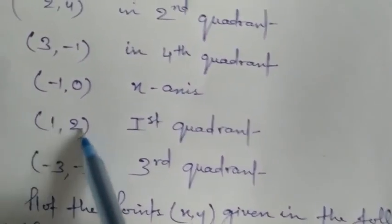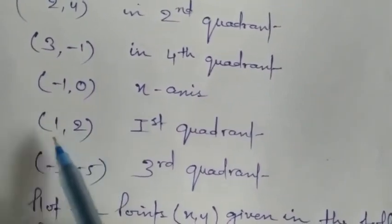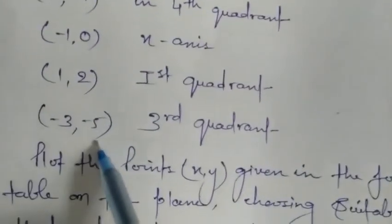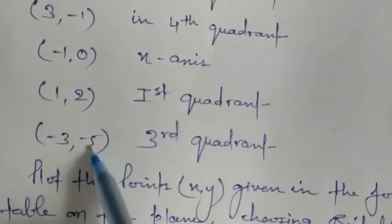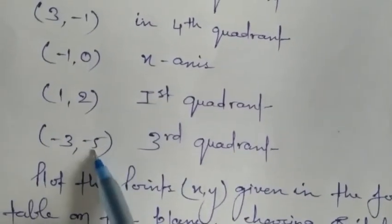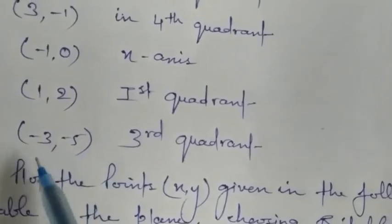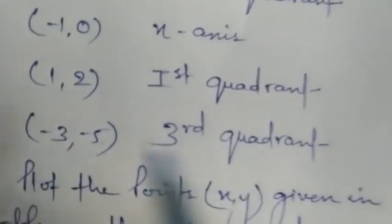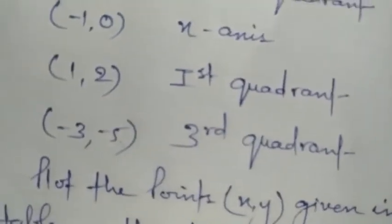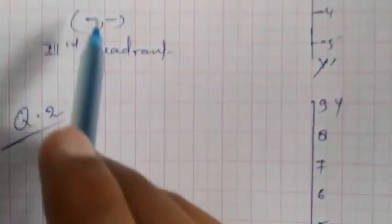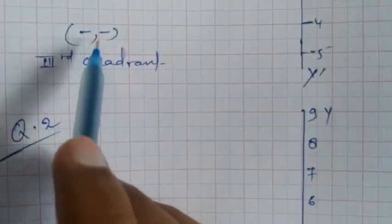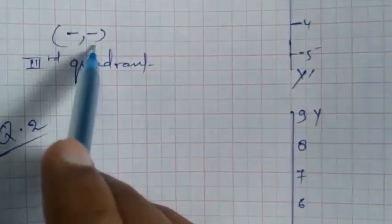For minus 3 comma minus 5 — both x and y are negative, which means this point lies in the third quadrant, because minus-minus (both negative) always falls in the third quadrant.